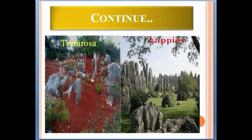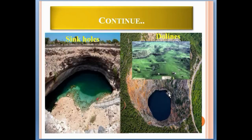Lapies are an etched, pitted, and grooved or drugged surface formed in areas of high relief, each called a Karen complex. These structures are best developed in non-porous limestone with steep surface slopes. As you can see, these are the limestone rubbed surfaces.